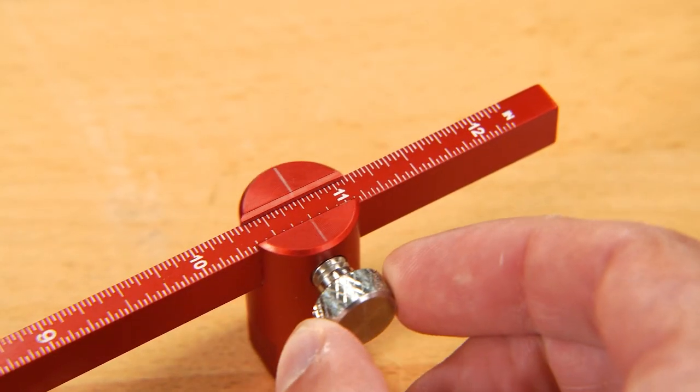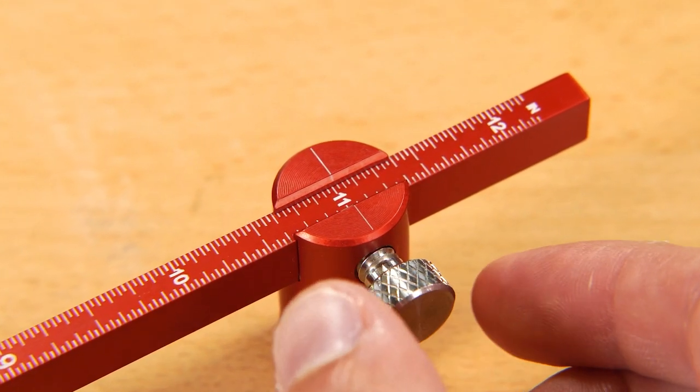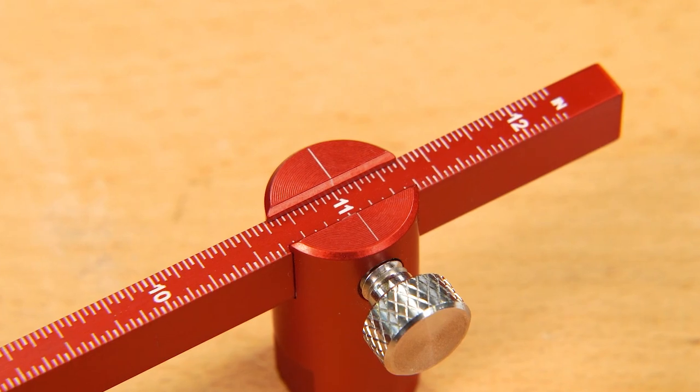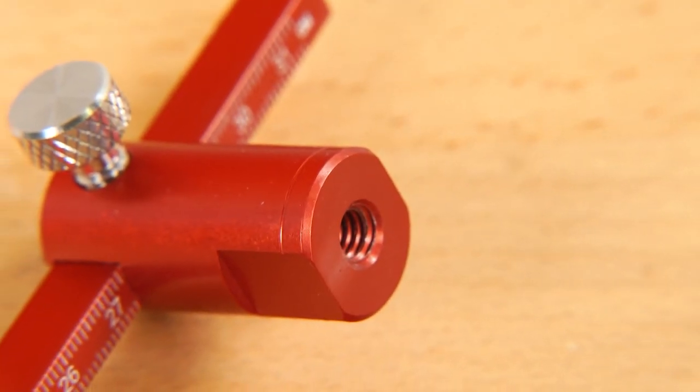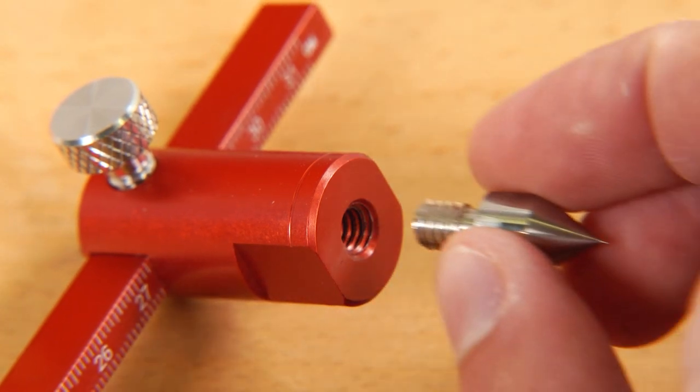Two sliding clamps are attached with hairlines engraved dead center for precise placement on the scales and the clamp bottoms have female threaded holes for connecting five different attachments.